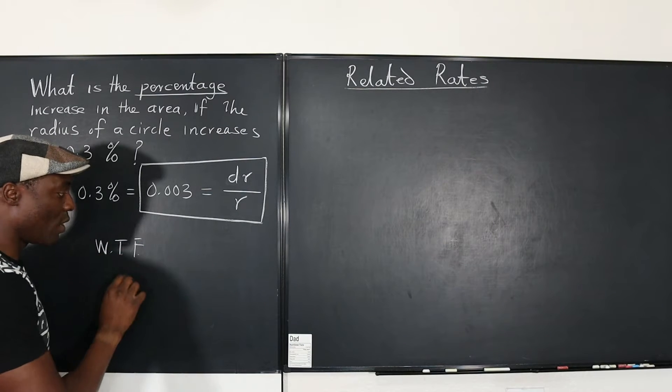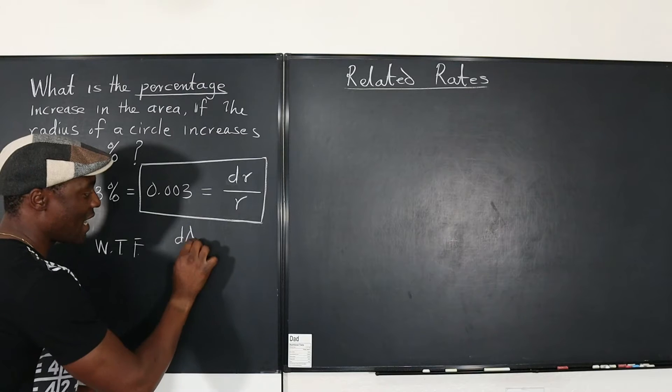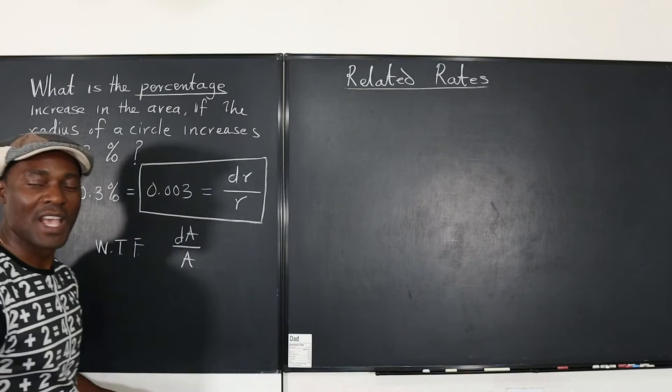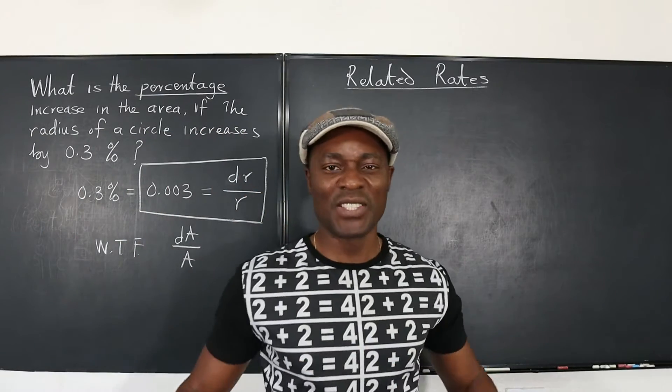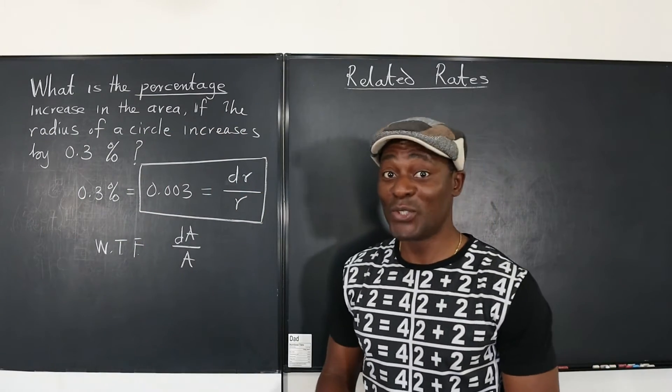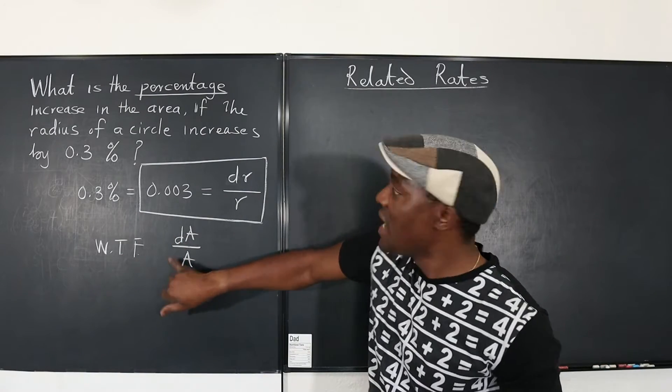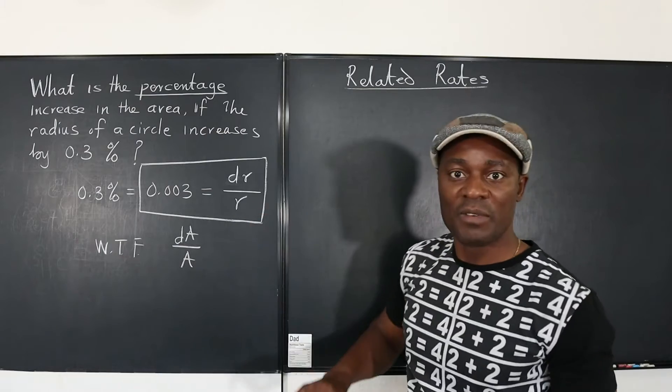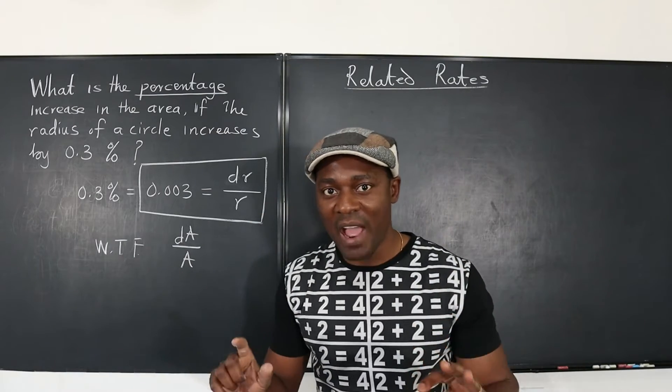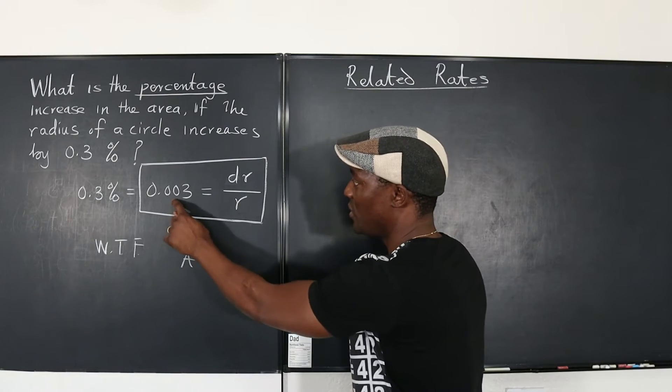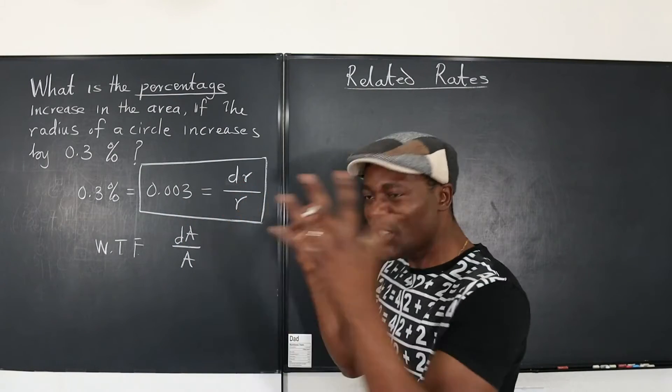We want to find dA compared to the original, so we're looking for this. We already have this. If you have this concept, this is going to be super easy for you because all you're looking for is you want dA to be on top of A and you want dr to be on top of r. Whatever connection they have, that's the basis for your answer.